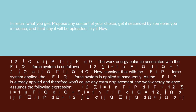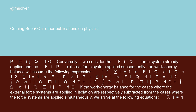Now consider that with the F_iP force system already applied, the F_iQ force system is applied subsequently. As F_iP is already applied and therefore won't cause any extra displacement, the work-energy balance assumes the following expression: (1/2) Σ(i=1 to N) F_iP · D_iP + (1/2) Σ(i=1 to N) F_iQ · D_iQ + Σ(i=1 to N) F_iP · D_iQ = (1/2) ∫_Ω σ_ijP · ε_ijP dΩ + (1/2) ∫_Ω σ_ijQ · ε_ijQ dΩ + ∫_Ω σ_ijP · ε_ijQ dΩ.